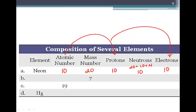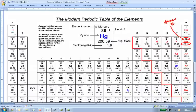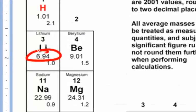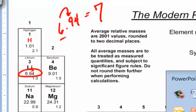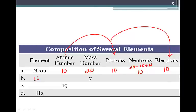If we want to find an element with a mass number of seven, we look at the periodic table for atomic masses that round to seven. Lithium has an atomic mass of 6.94, which rounds to a mass number of seven. Lithium's atomic number is three, so it has three protons and three electrons. Our mass number of seven equals three protons plus neutrons, so lithium has four neutrons.